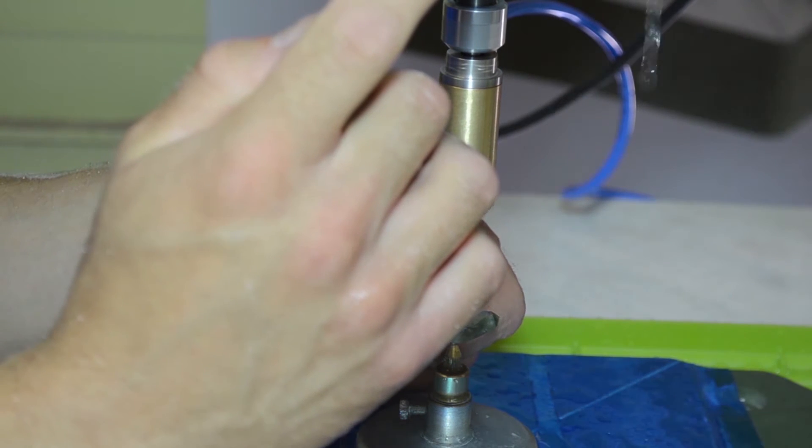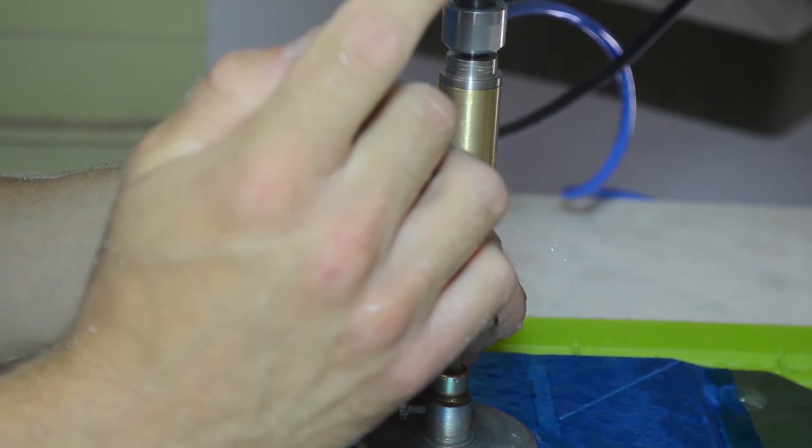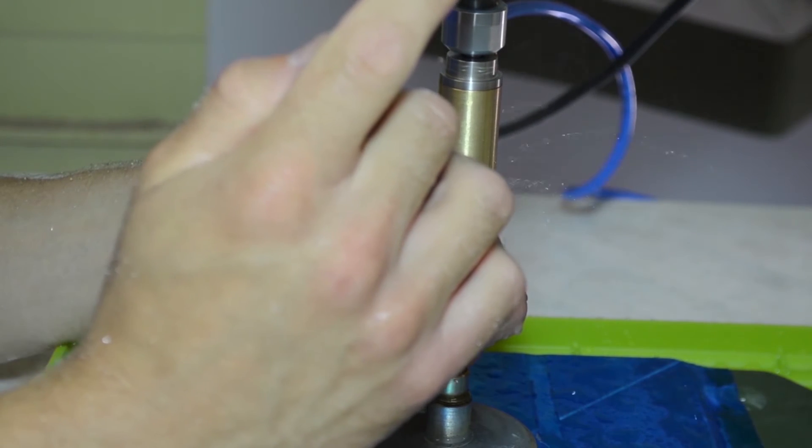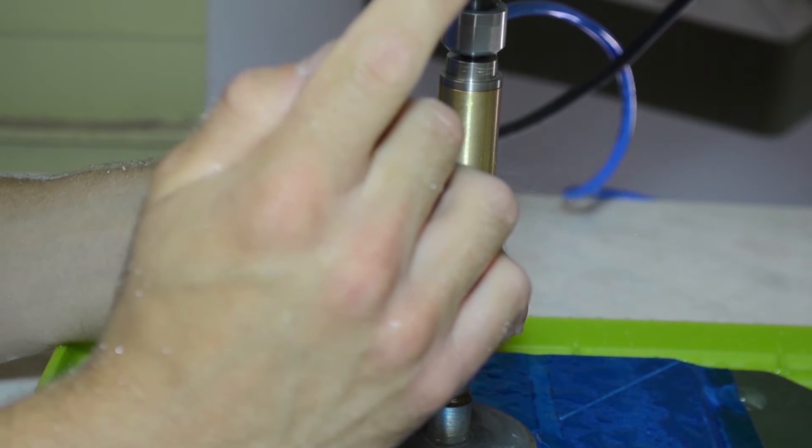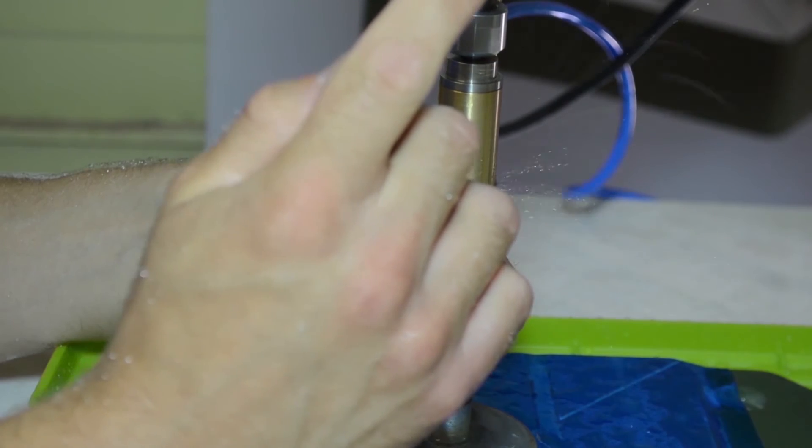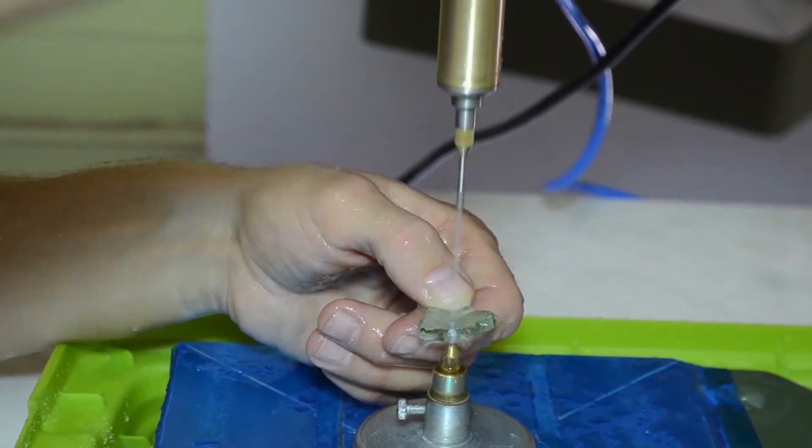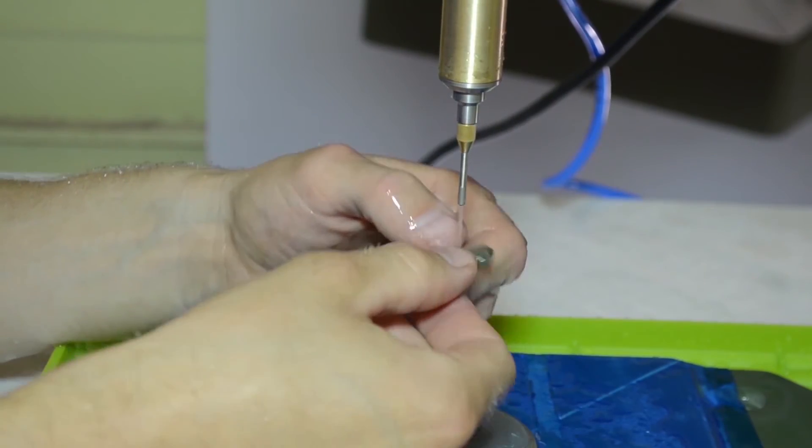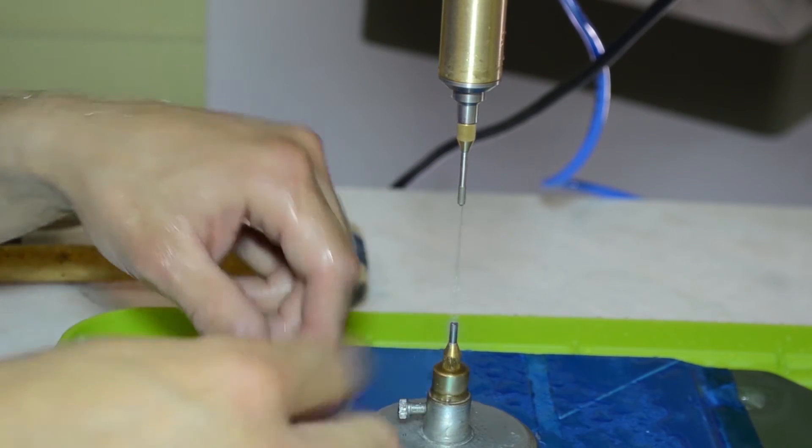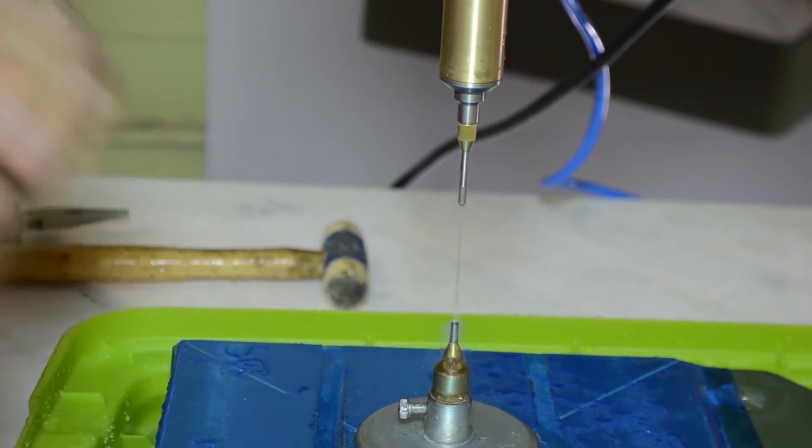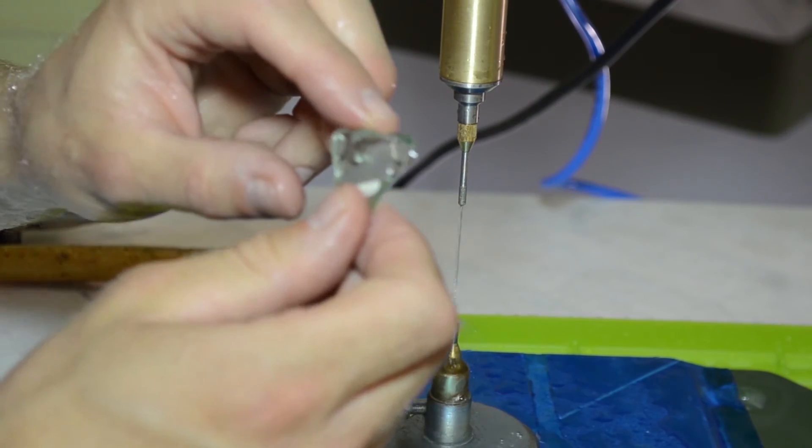Every time you release on the pressure you should see a little bead of water come up and that's cleaning out all the material from the hole. What you have is a perfectly clean smooth hole every time, perfectly aligned and centered.